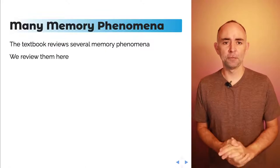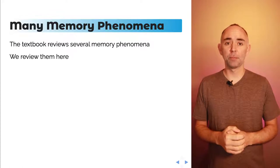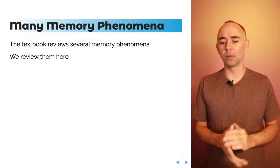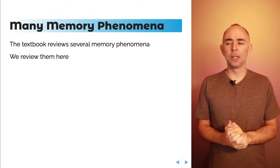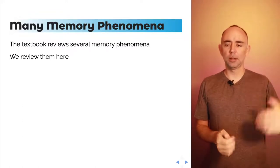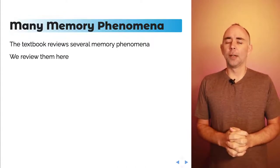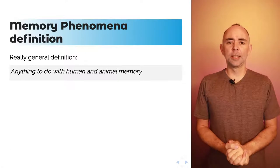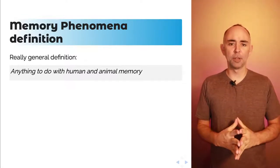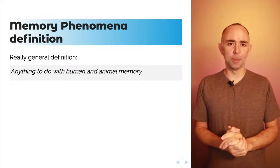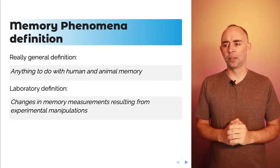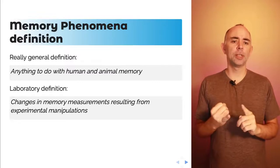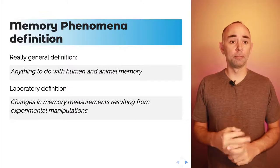Your textbook reviews several memory phenomena, and we're going to talk about some of them. The list goes on well beyond what's in the textbook or what we have time for in a mini lecture. The idea of this portion is to give you a landscape overview of what we've learned about how memory processes work. As a general definition, memory phenomena refers to anything to do with human and animal memory. More specifically, we'll use a laboratory definition: changes in memory measurements that result from experimental manipulations done in the laboratory.